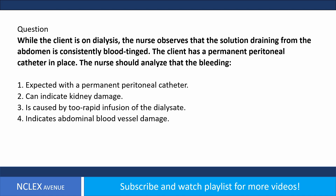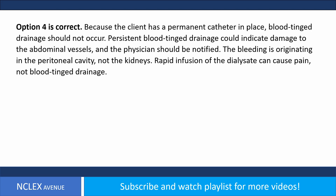While the client is on dialysis, the nurse observes that the solution draining from the abdomen is consistently blood-tinged. The client has a permanent peritoneal catheter in place. The nurse should analyze that the bleeding: one, is expected with a permanent peritoneal catheter; two, can indicate kidney damage; three, is caused by too rapid infusion of the dialysate; four, indicates abdominal blood vessel damage.